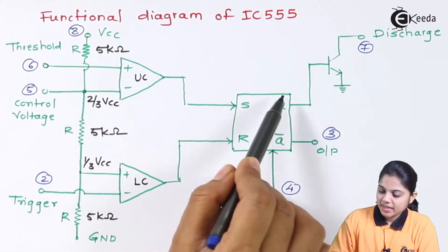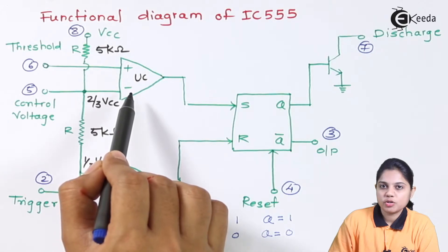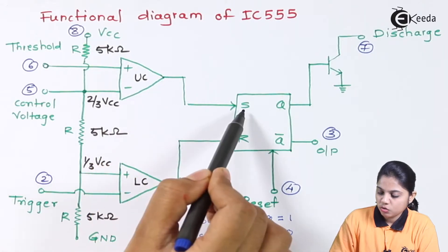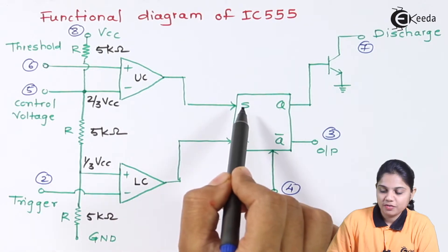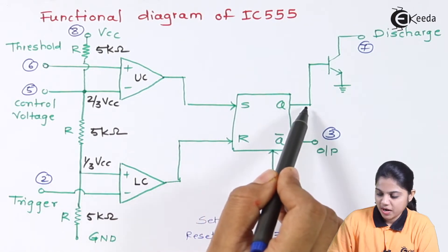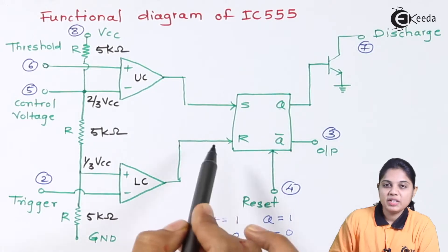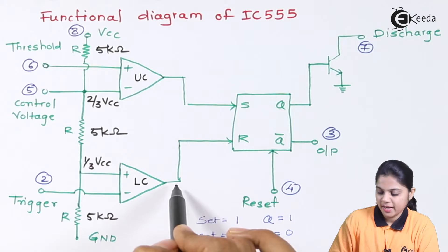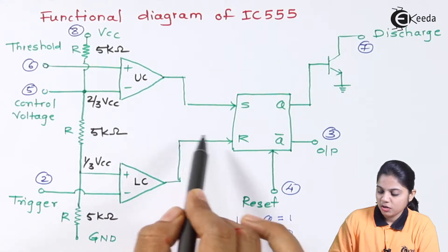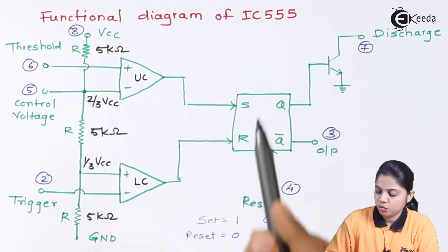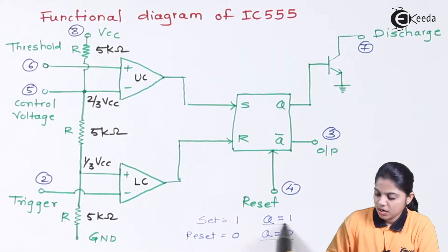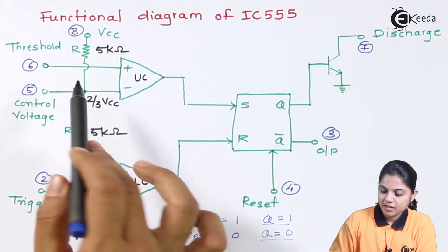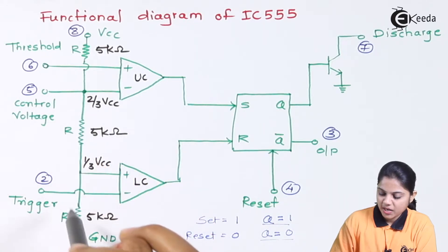To set the flip-flop, the upper comparator output should go high. If that output goes high, a 1 goes to the set input, setting the flip-flop so Q becomes 1. To reset the flip-flop, the lower comparator output should go high. If it is high, a 1 goes to reset, resetting the flip-flop so Q becomes 0. How to achieve these set and reset conditions depends entirely on the input terminals.